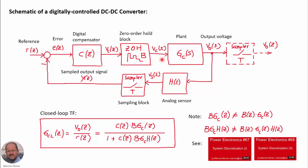Today we are going to learn how to design the digital compensator directly using these discrete transfer functions. It is important to remember that BGC(z) is not equal to the transfer function of the zero-order hold block times the transfer function of the plant. Similarly, GGCh is not the same as B times GC times H. Please refer to the two previous videos for more information on discretization.